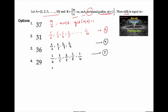Starting with 4: 4 upon 5 is valid, 4 upon 6 we cannot take, 4 upon 7 is valid, 4 upon 8 we cannot take, 4 upon 9 is valid, 4 upon 10 we cannot take. So 3 elements.